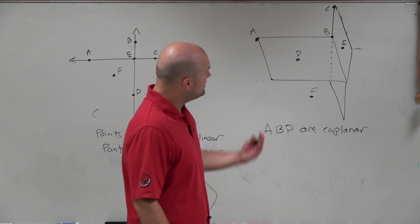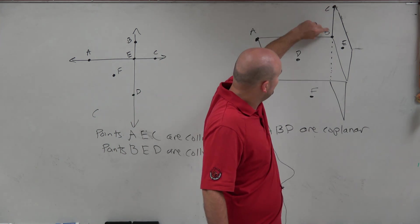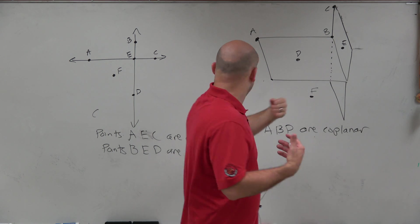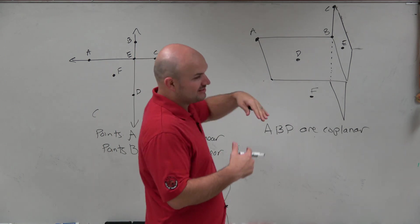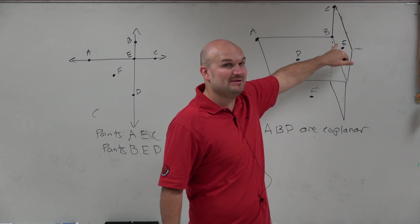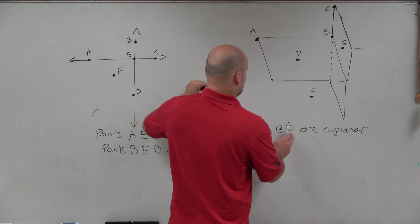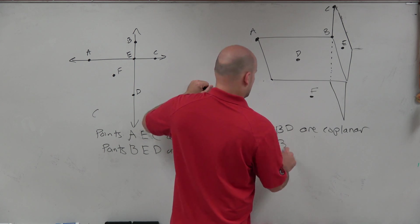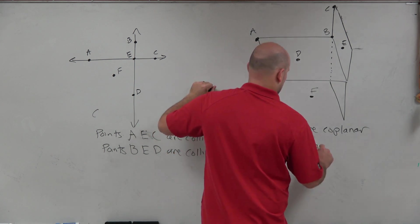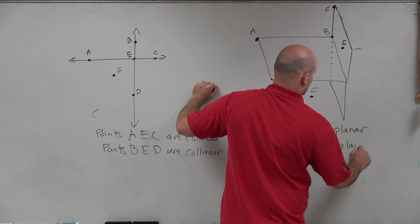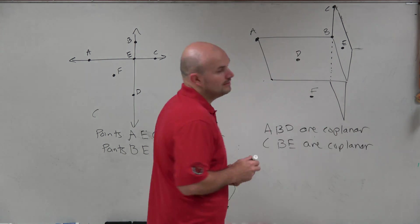And then if you look at this vertical one, you can see that we have points C, B, and E. And again, we have points that are common. You can see right at their intersection is point B. So that is both coplanar for both of my planes. But I'll say C, B, and E are coplanar.